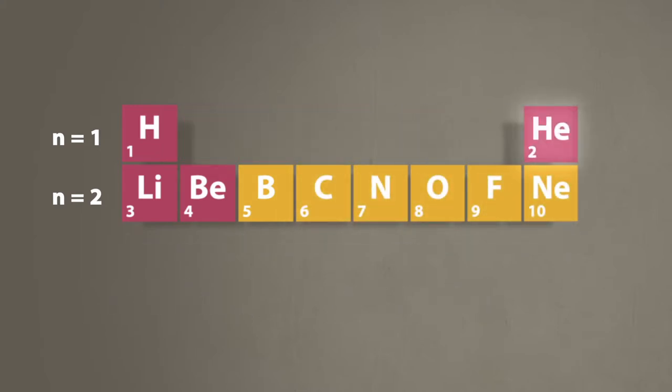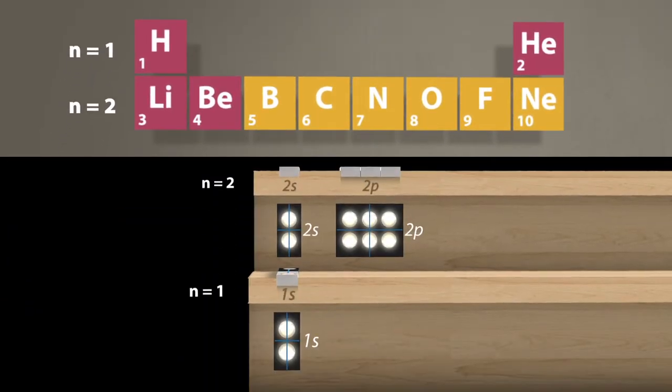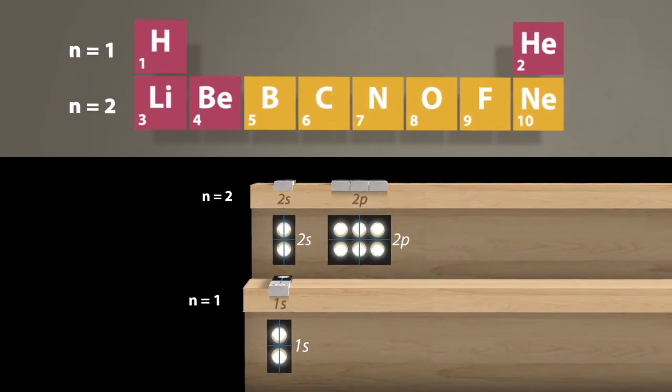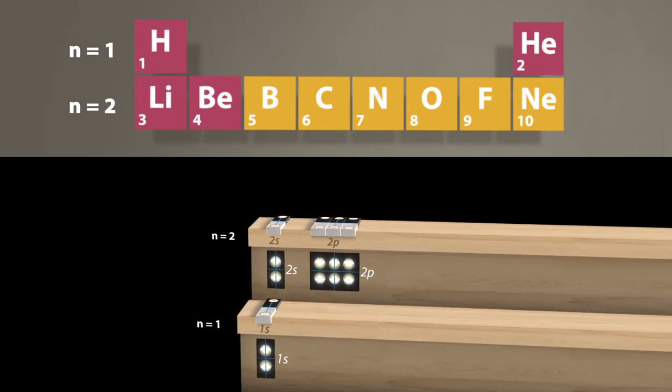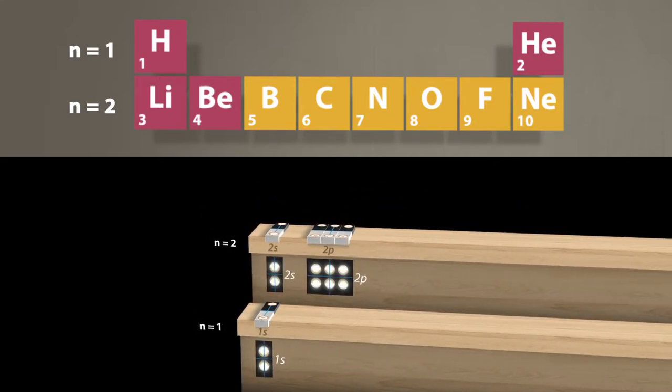The far right section of the periodic table lists noble gases. The shells of those elements are filled completely. Here, a lot of energy is required to free an electron from its ground state.